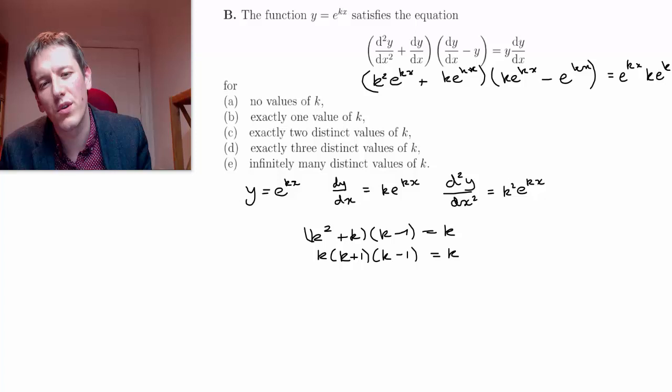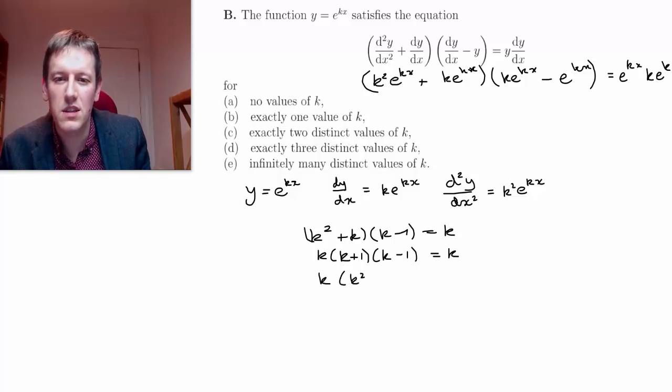So actually, if I subtract 1 from each side here, I've got k times k squared minus 1 minus 1. That's equal to 0.